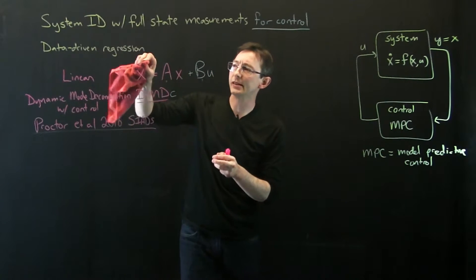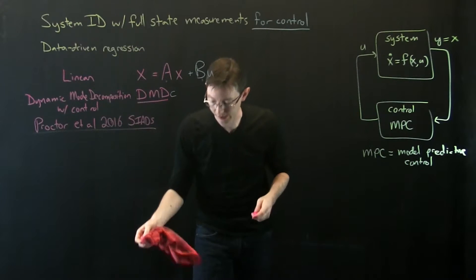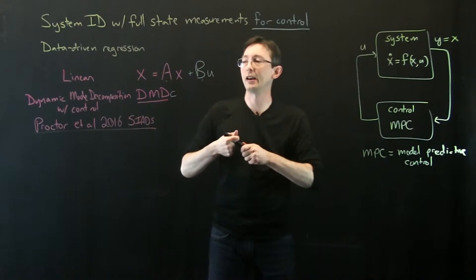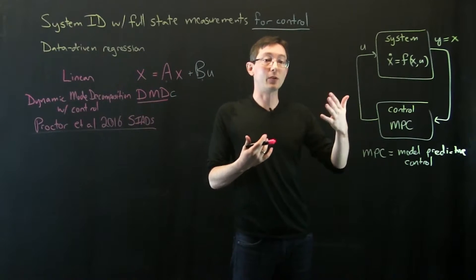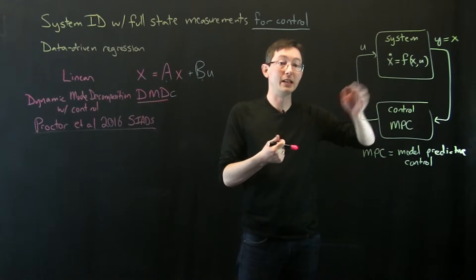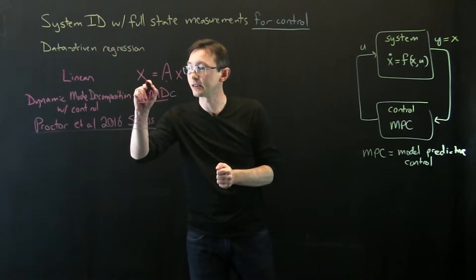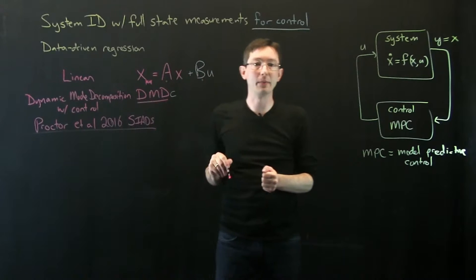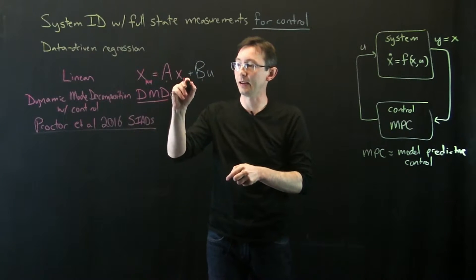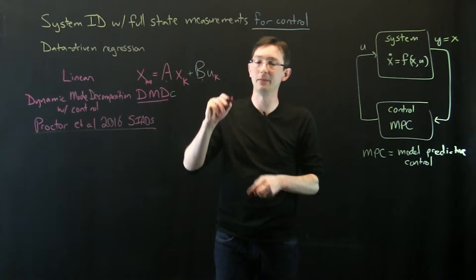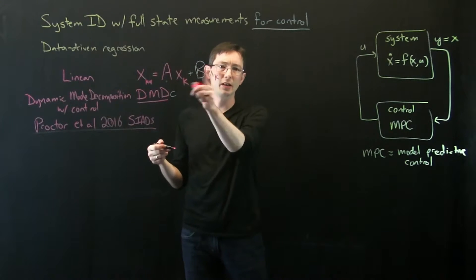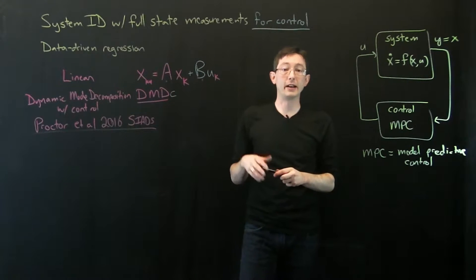In general, this is going to be framed in a discrete time setting. In lots of experiments we're actually going to have measurements sequentially in time. So I'm going to modify this to be x at time k plus 1 equals A x at time k plus B u at time k. This is just a discrete time version of my dynamical system.